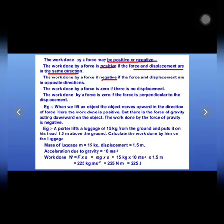The work done by a force is negative if the force and the displacement are in opposite directions. In the tug of war example, the work done by the losing team is considered as negative work done. The work done by a force is zero if there is no displacement, as the object must be displaced when force is applied — if there is no change in position, there is no work done.